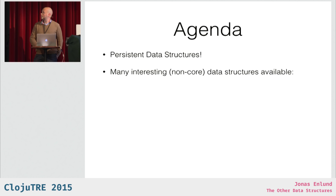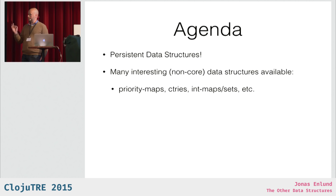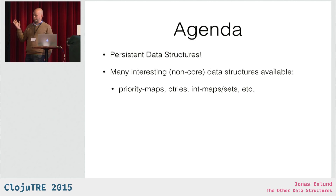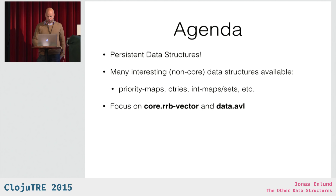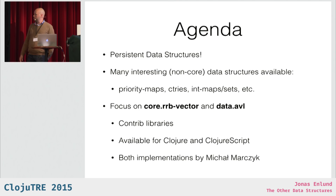There are many interesting ones that are not in core: priority maps, where you sort by the value; sorted maps by value; tries; int maps and sets, which are specifically optimized for integers. But I want to focus on these two: core.rrb-vector and data.avl. They are contrib libraries available for both Clojure and ClojureScript, and I haven't implemented any of them — both are implemented by Michel Martstick.